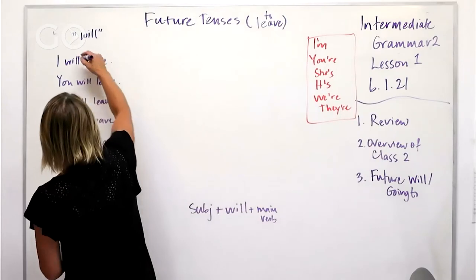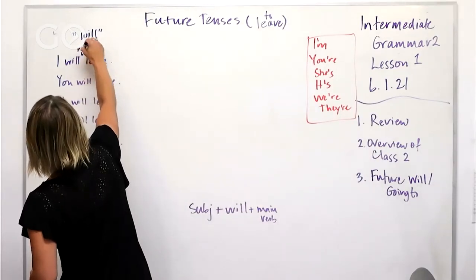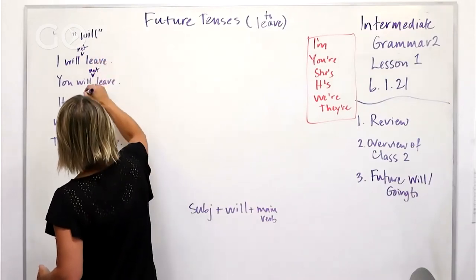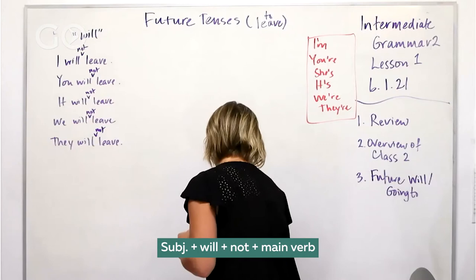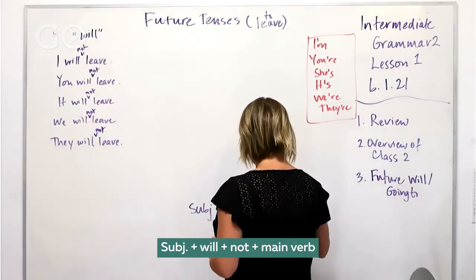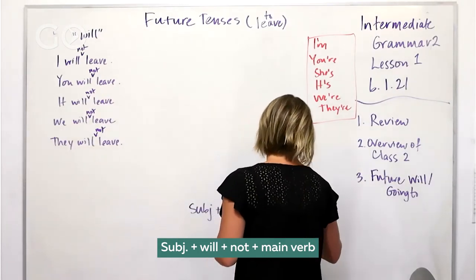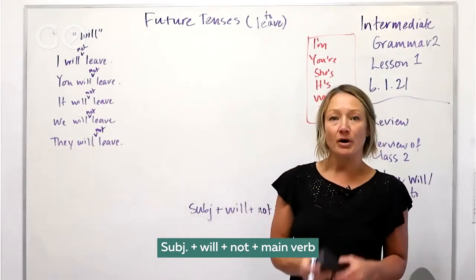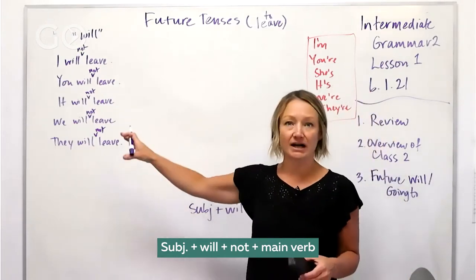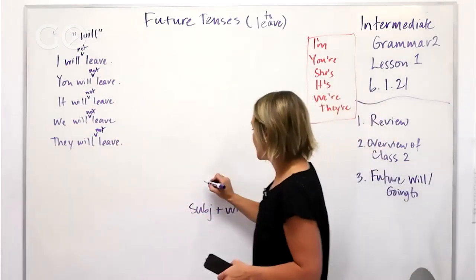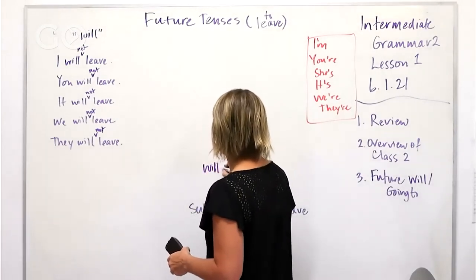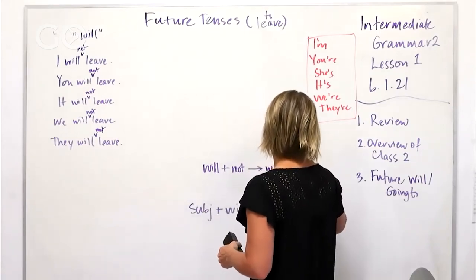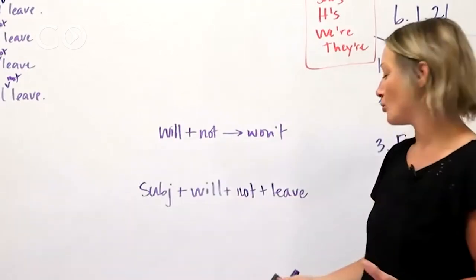And easily enough, we're just going to put in that not right between. Okay, you will not leave. So you're going to just move this over easily enough. Okay, it will not. Now the part about this, so that part is simple, we know where not goes. The other thing that we need to do is practice will plus not equals won't.